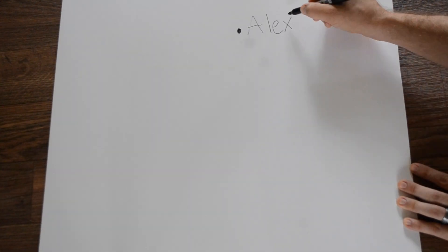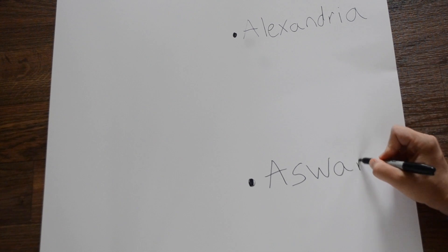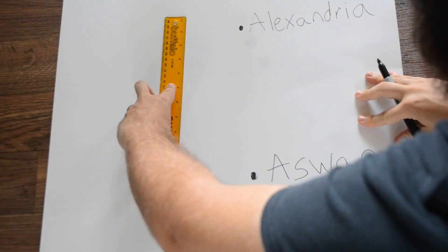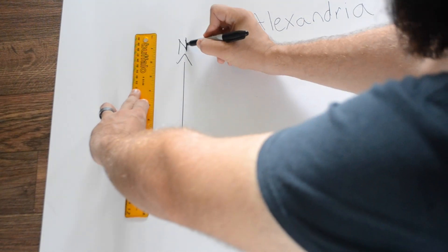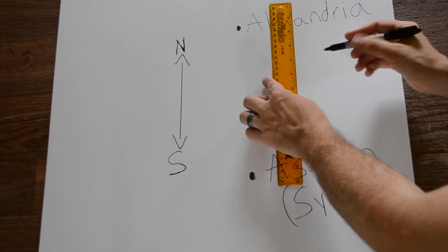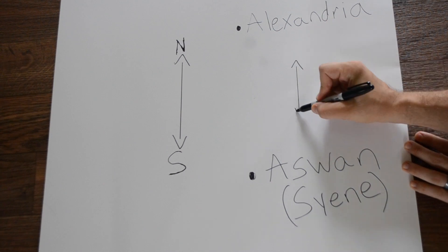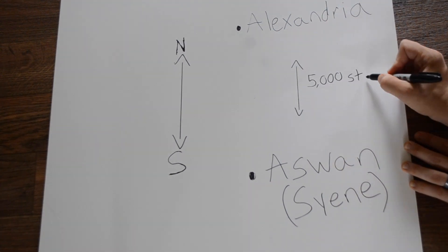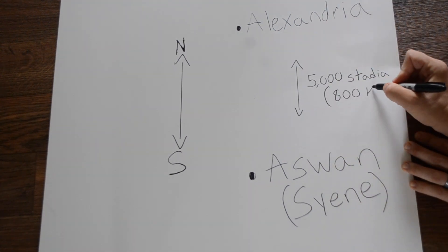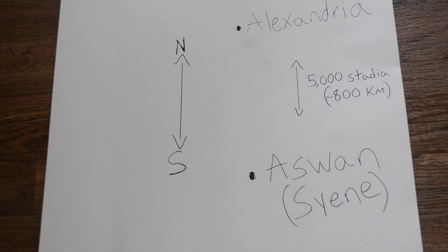All it took were three simple steps. Step one: Eratosthenes had to find the distance between two Egyptian cities, Alexandria and what was then called Syene, but is now called Aswan. What makes these two cities special is that they lie almost directly north and south of each other, and that's important. He found the distance by consulting behematists — people who walked around Egypt measuring the extent of the territory for agricultural and tax collecting purposes.